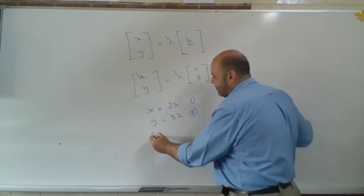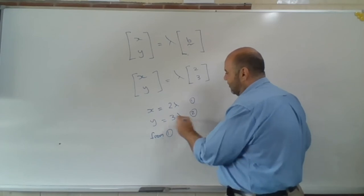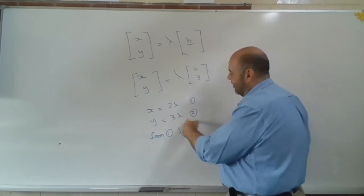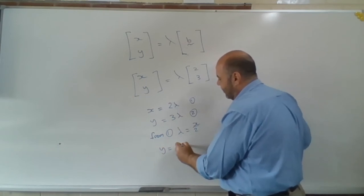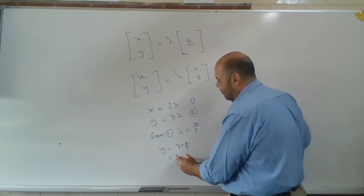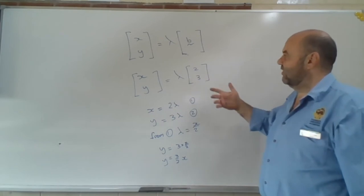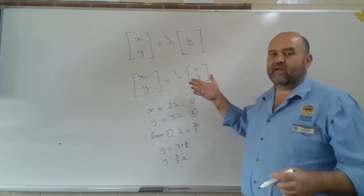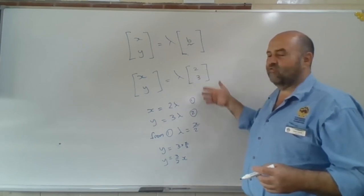So let's have a look at that. So from equation 1, lambda equals x over 2. Substituting that into equation 2, we get y equals 3 times x over 2 or 3 over 2x. Here is the equation of the line through the origin and the vector (2, 3).